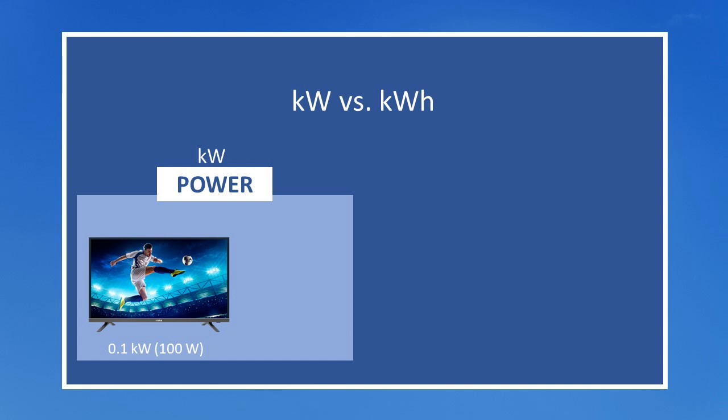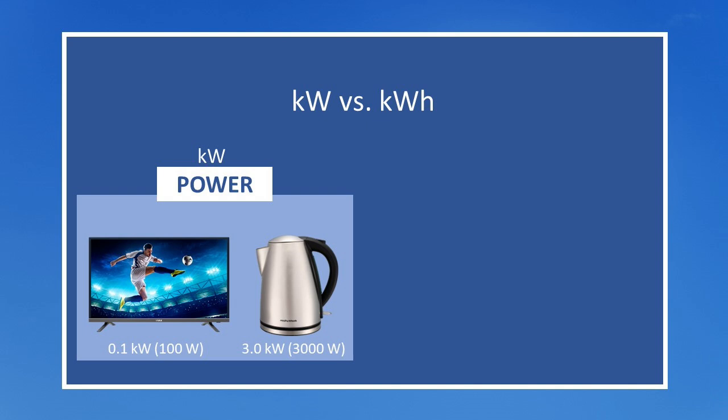The higher the kilowatt rating of a device the more electrical power it uses. For example, a low powered electrical appliance like an LED TV only uses around 100 watts or 0.1 kilowatts, even if it has a really big screen. On the other hand, a typical kitchen kettle has a power rating of 3000 watts or 3.0 kilowatts, which is why it makes sense not to fill your kettle every time you just want enough boiling water for a single cup of tea or coffee.